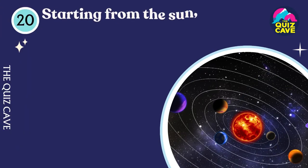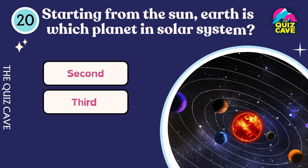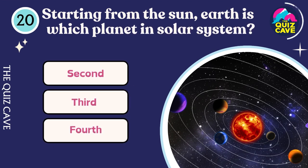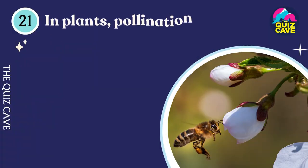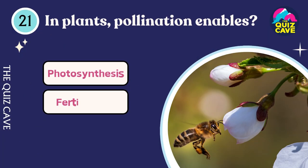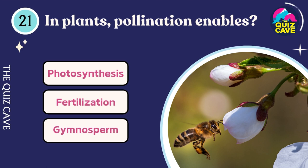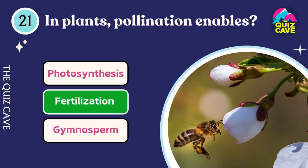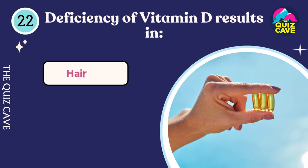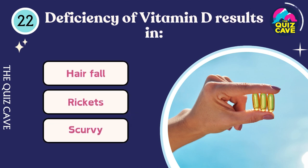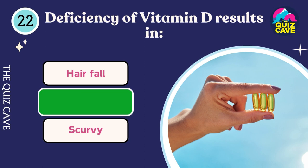Starting from the Sun, Earth is which planet in the solar system? Third. In plants, pollination enables fertilization. Deficiency of vitamin D results in rickets.